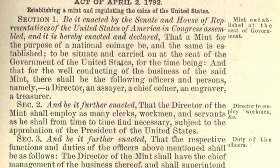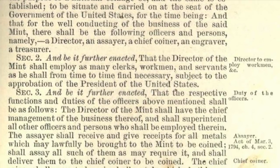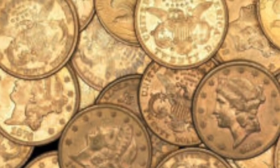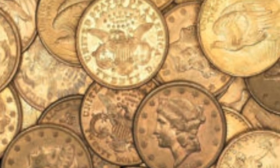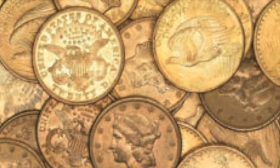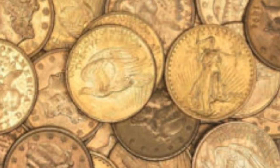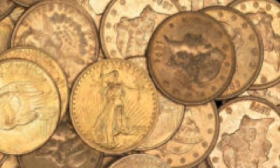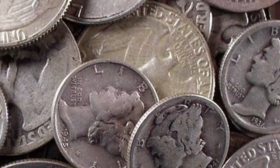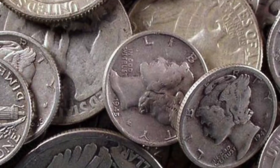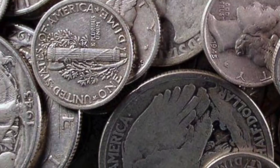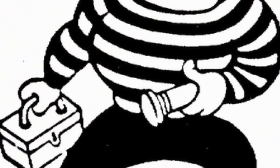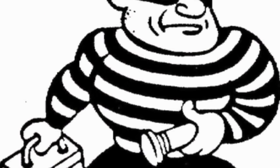This legislation basically specified that $10, $5, and $2.50 coins — known as Eagles, half Eagles, or quarter Eagles — had to be made of their face value in gold. And all dollar, half dollar, quarter dollar, dime, and half dime coins had to be made of their value in silver.